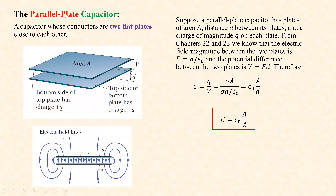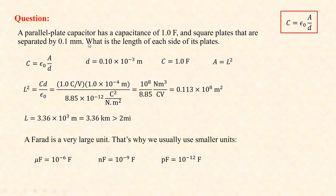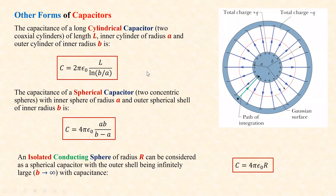We talked about the parallel plate capacitor: two plates that are parallel with surface area A and separation D. The capacitance is C = ε₀A/D. One farad is a very large unit because ε₀ is very small, so in practice we use microfarad, nanofarad, and picofarad.